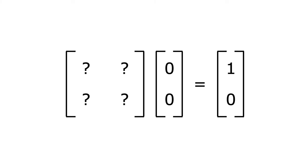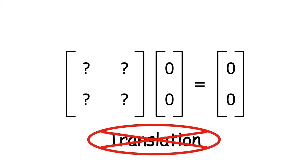But this is impossible, since all matrices map the zero vector to itself. This means that 2 by 2 matrices cannot do 2D translations.